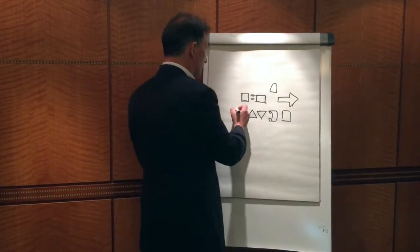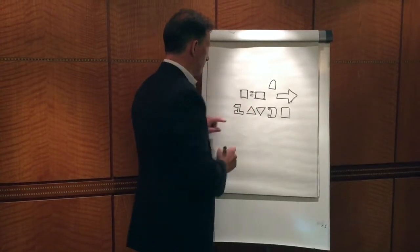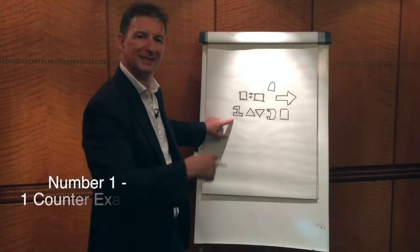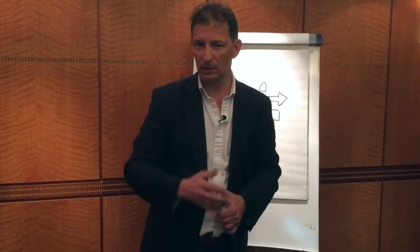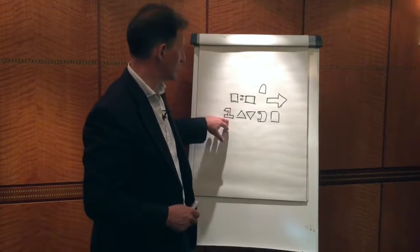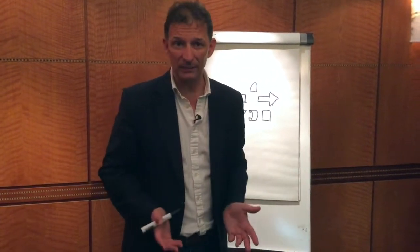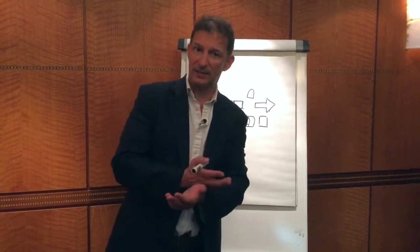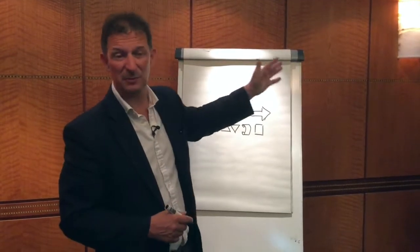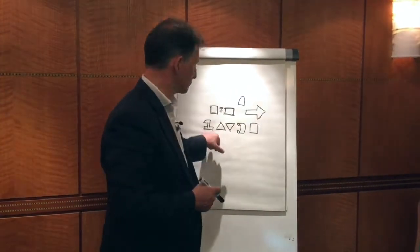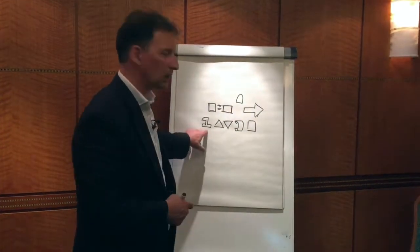Moving on, we have the symbol of a number one, which represents one counterexample — because that's all you need to start to loosen the belief. In this case it could be: 'Have you ever gone out when it has been raining and it was actually fine?' If the person says yes, there's the counterexample, which casts doubt on the belief — 'if it's raining then it's wet, which means I can't go out.' Well, actually, I've been out in the rain before. How was it? Fine. There you go.